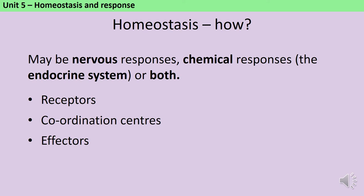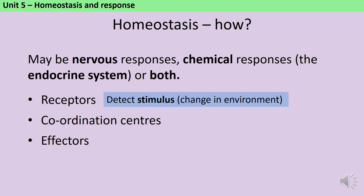Your body contains several different kinds of homeostatic control systems, and these can either be based on your nervous system, on hormones, or a combination of the two. But first you need to understand that all of these different control systems have three key components: receptors, coordination centers, and effectors.